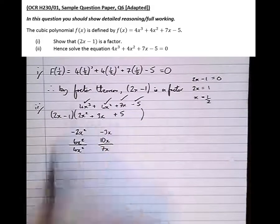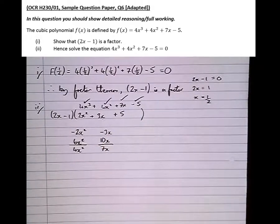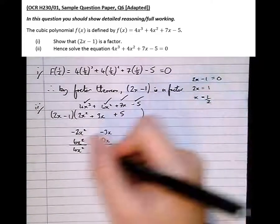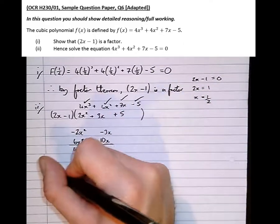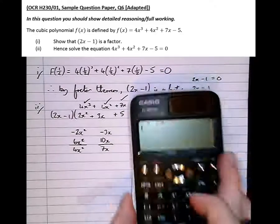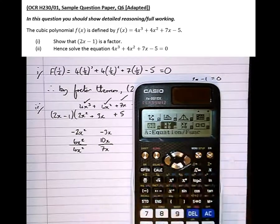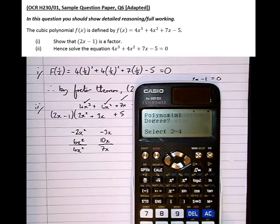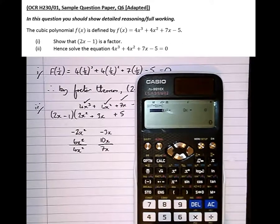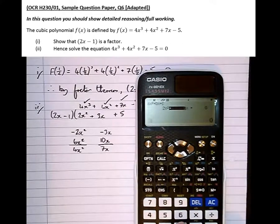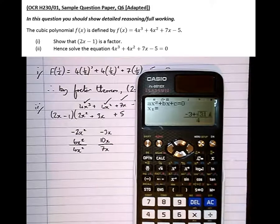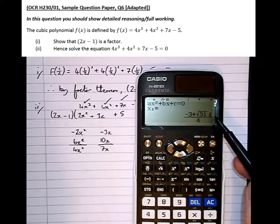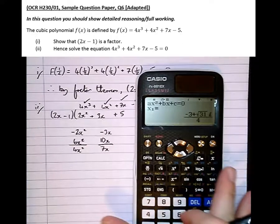So, if we try and solve it, we use the quadratic solver just to see if there's any solutions before we show full working. So polynomial, degree 2, 2x squared plus 3x plus 5. And notice here that the solutions involve i's, imaginary numbers. That means there's no real solution to this quadratic part.